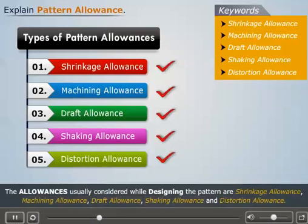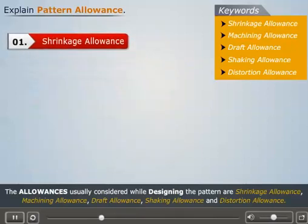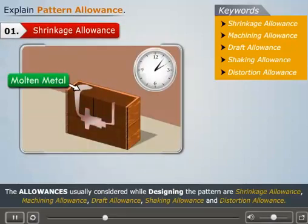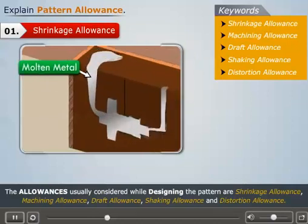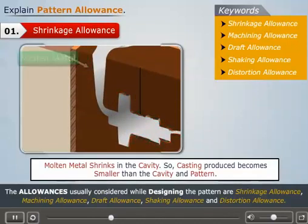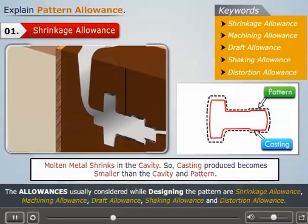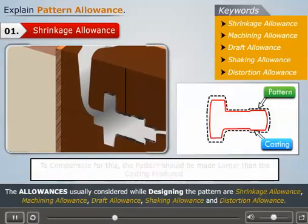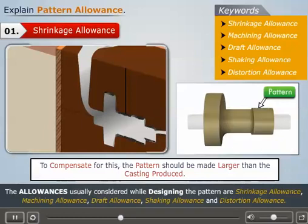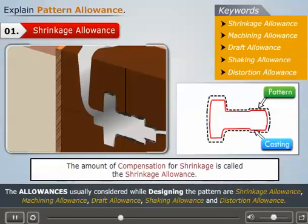Let us start with shrinkage allowance. Generally, during the solidification of molten metal in the mold, the molten metal shrinks in the cavity. So, the casting produced becomes smaller than the cavity and pattern. Therefore, to compensate for this, the pattern should be made larger than the casting produced. The amount of compensation for shrinkage is called the shrinkage allowance.